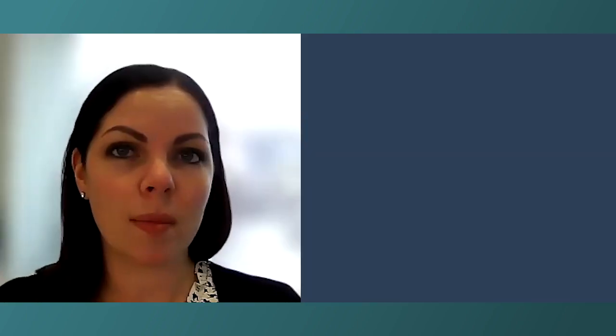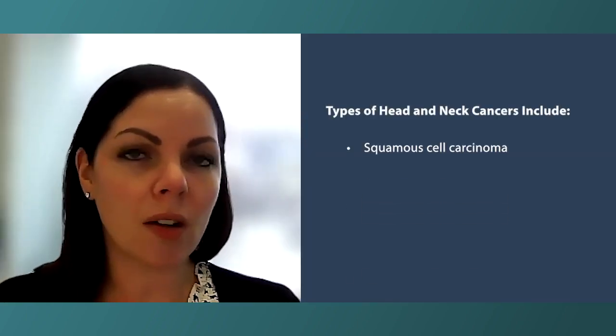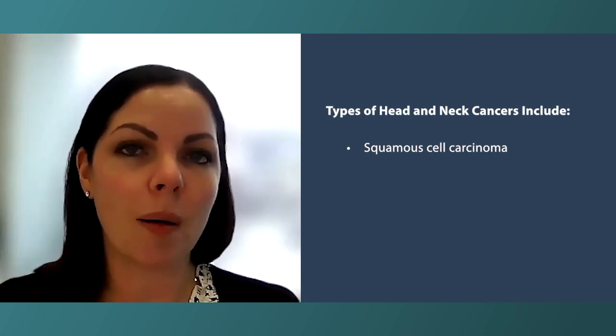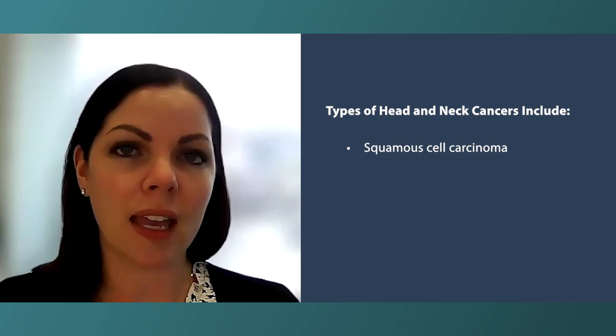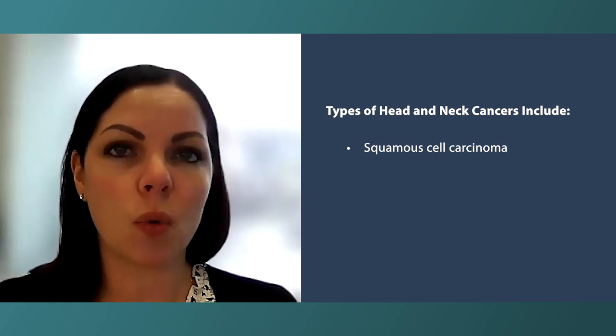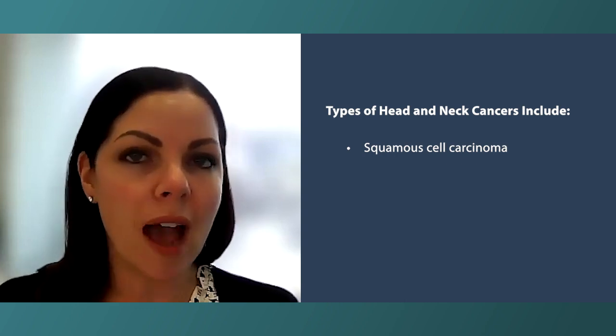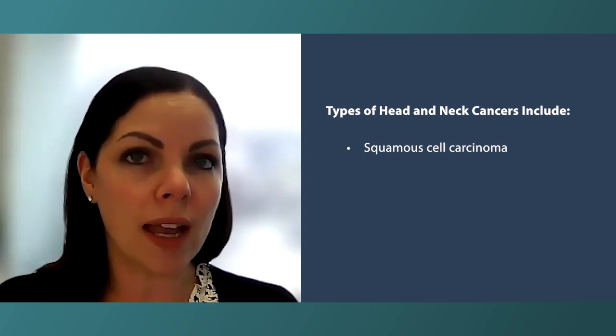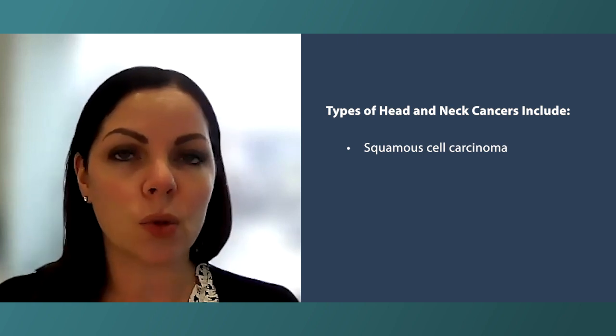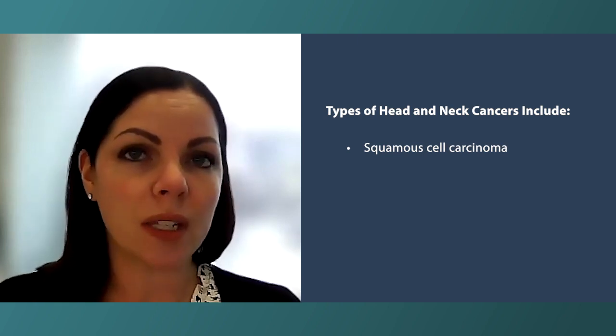What are the types of head and neck cancer and where can they start in the body? There are several different types. The majority are called squamous cell carcinomas. Squamous cell carcinoma encompasses over 90% of head and neck cancers, and those can start anywhere on the tip of the tongue, anywhere in the oral cavity, the tonsils, the back of the throat called the oropharynx, or in the larynx or around the voice box.